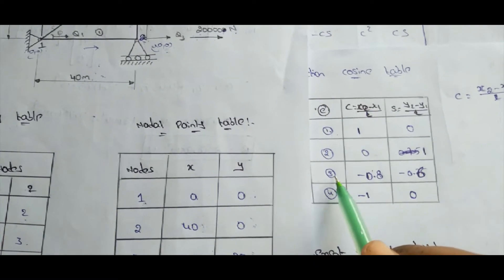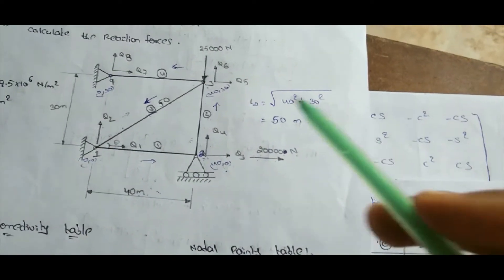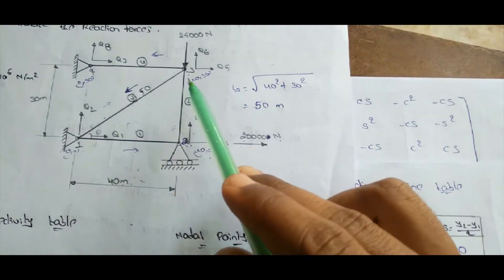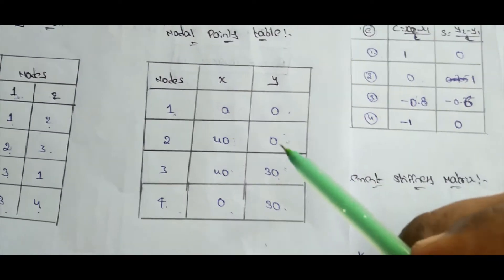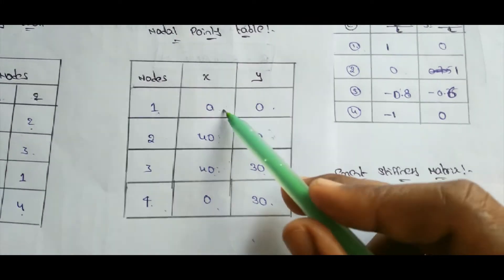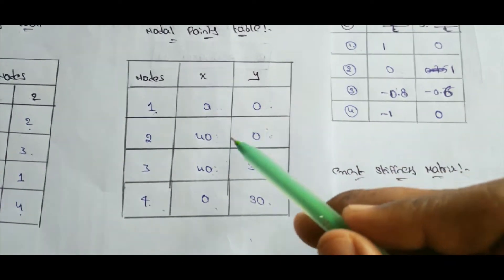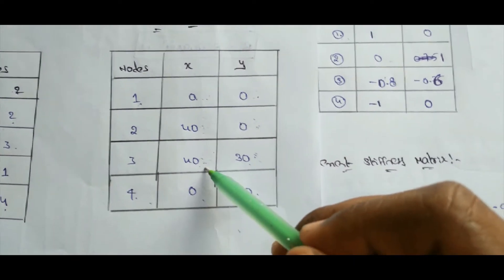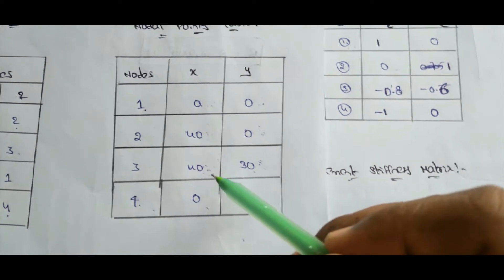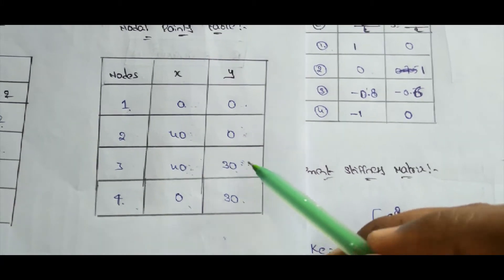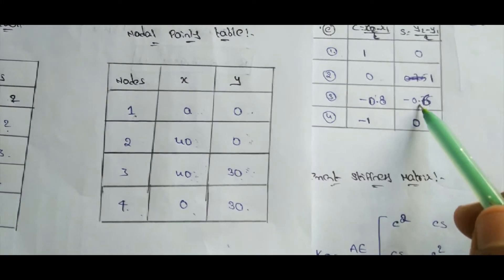For element 3, having nodes 3 and 1: x2 − x1 = 0 − 40 = −40, and the length is 50, so C = −40/50 = −0.8. For S: y2 − y1 = 0 − 30 = −30, so S = −30/50 = −0.6. Therefore C = −0.8, S = −0.6 for element 3.